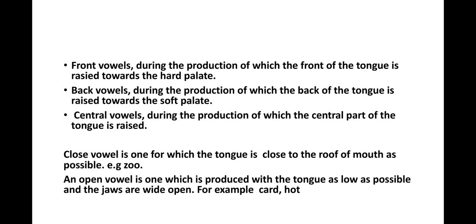A closed vowel is one for which the tongue is as close to the roof of the mouth as possible, as in the word 'zoo'. An open vowel is one which is produced with the tongue as low as possible and the jaws are wide open, for example as in 'hot' and 'card'. Let's move on to the next slide.